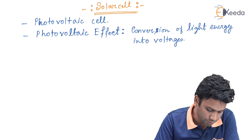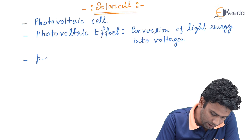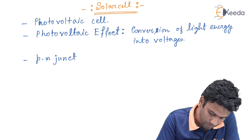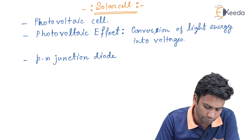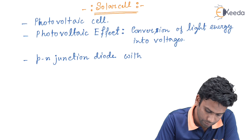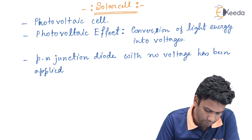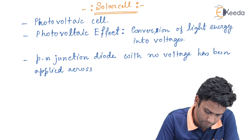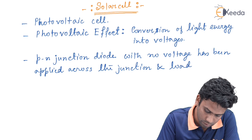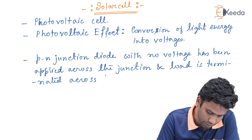A solar cell is basically a p-n junction diode with no voltage applied across the junction, and a load is terminated across the junction.